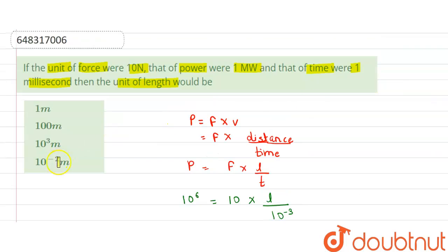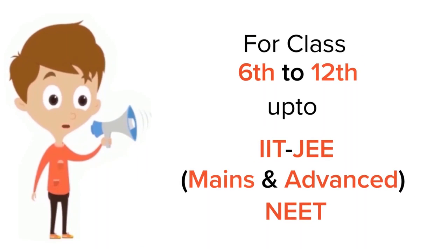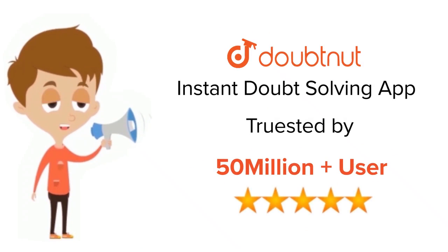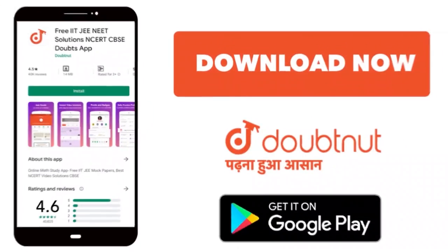So Option 2 is the right answer: 100 meters. Thank you. For Class 6 to 12, IIT-JEE and NEET level, trusted by more than 5 crore students, download Doubtnet today.